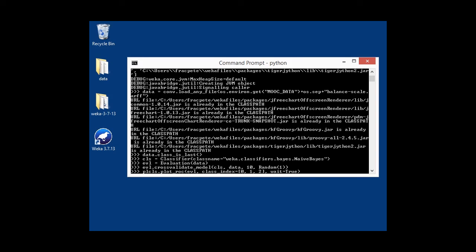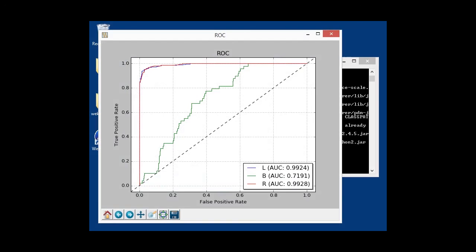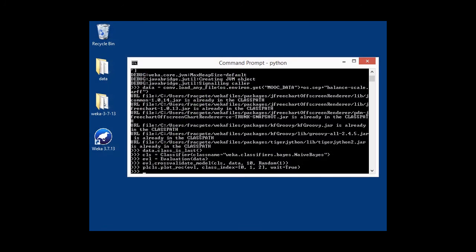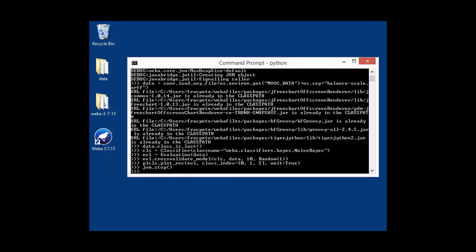And we want to plot 0, 1, and 2 class label indices. And here we have those. Once again, we can see the AUC values for each of the labels, whether it's L, B, or R. And the final step, stopping the JVM again, and exit.